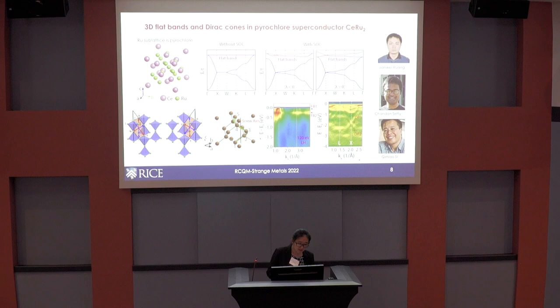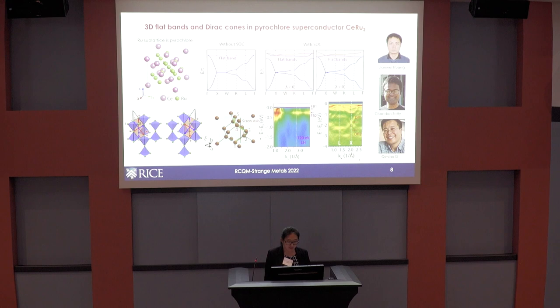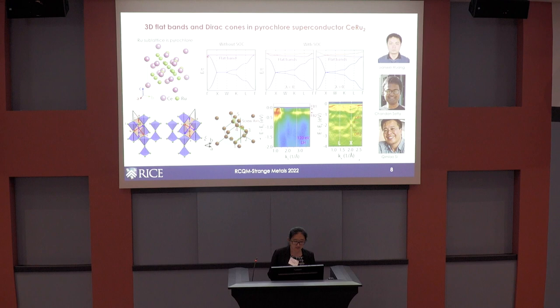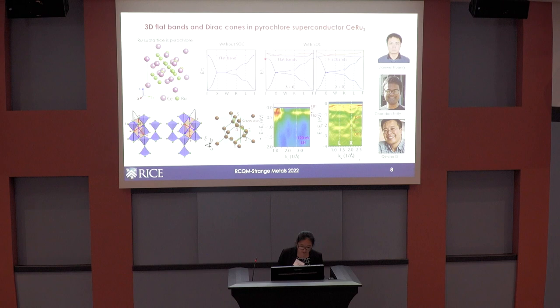The end result from tight-binding calculations gives two degenerate flat bands with a touching point with two dispersive bands. When spin-orbit coupling is included, a gap opens at this triple-degeneracy point. Additionally, for pyrochlore lattices there is a non-symmorphic symmetry, and associated with that symmetry is a protected point at the X point of the Brillouin zone where all bands remain fourfold degenerate even in the presence of spin-orbit coupling — it remains gapless — producing three-dimensional Dirac points at the X point.